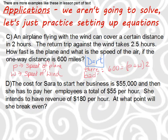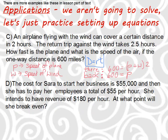Now write the equation for the return trip. The distance is still 600. The plane is battling the wind, so you subtract the wind: 600 equals (P minus W) times 2.5. Either divide both sides by 2.5 or distribute the 2.5 — then you have your system of equations.